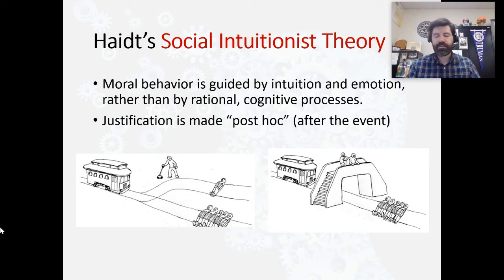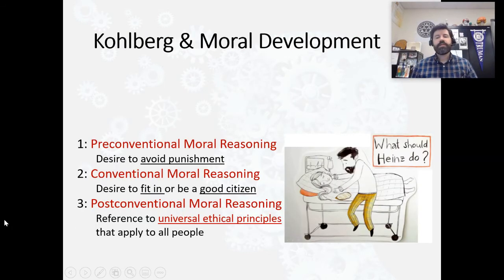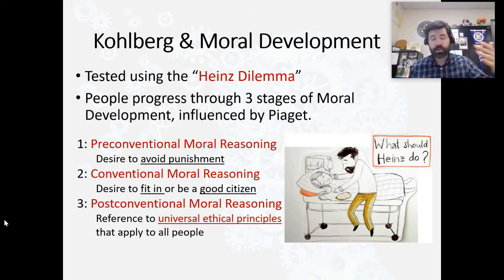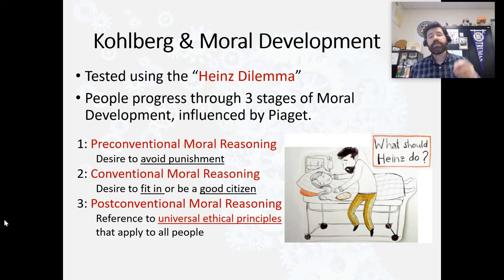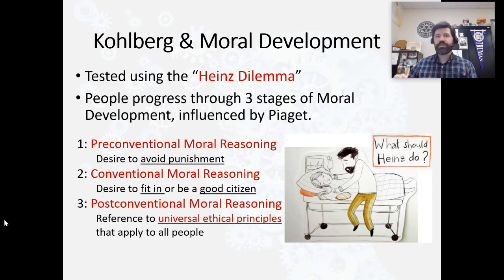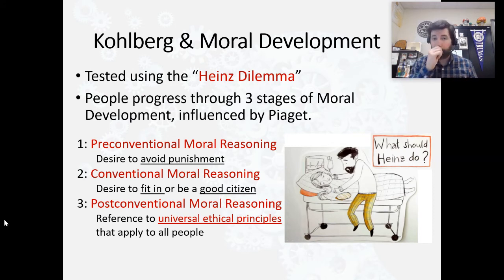The second person we're going to talk about is a man named Lawrence Kohlberg. Lawrence Kohlberg worked at the University of Chicago and he was curious about moral development. He was influenced by Jean Piaget. Kohlberg claims that our moral development is really based off of cognitive development — that our belief about whether something is morally right or wrong is based on what we understand and what we are capable of understanding with our cognition.